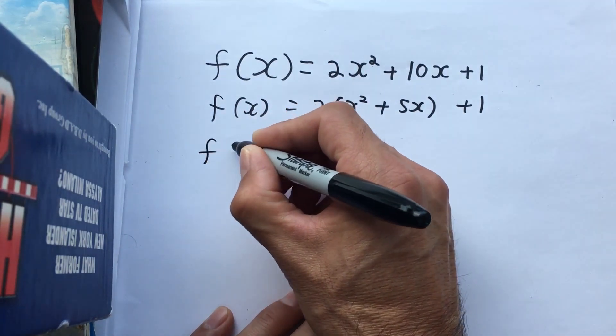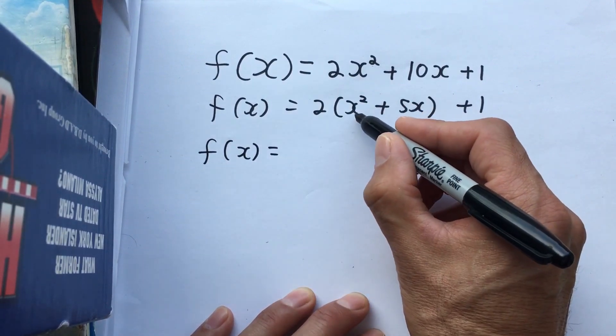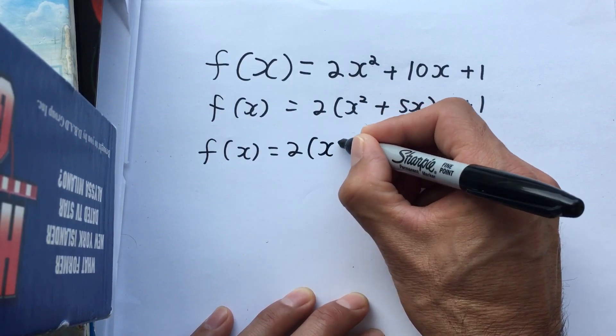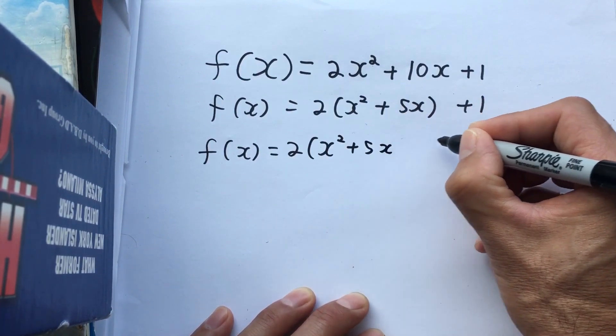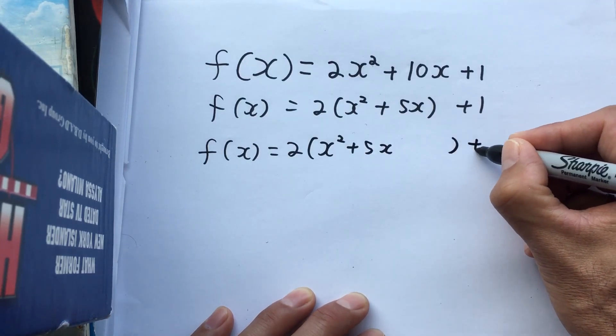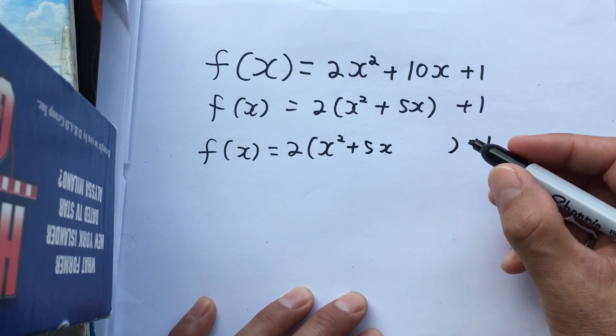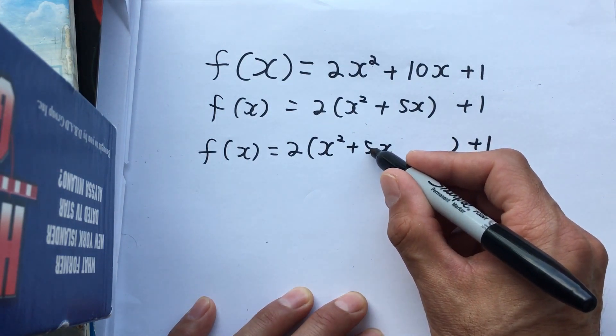What we want to do now is add the magic number, and that means the number that will create a perfect square inside of our brackets. So we'll just copy it out and leave space for the number we're going to add. And remember, immediately after subtract.